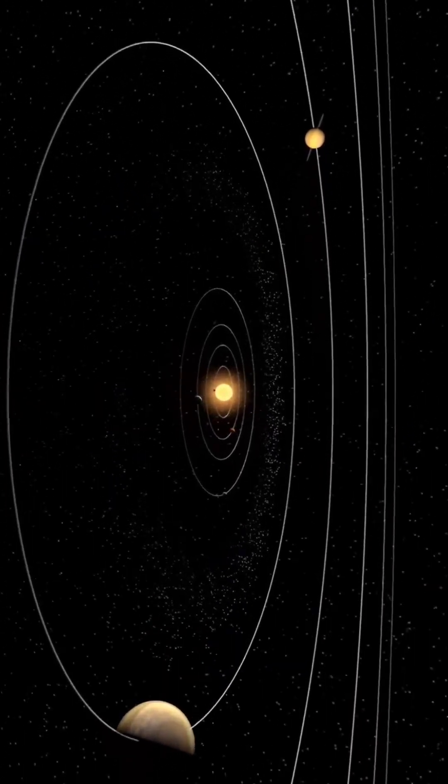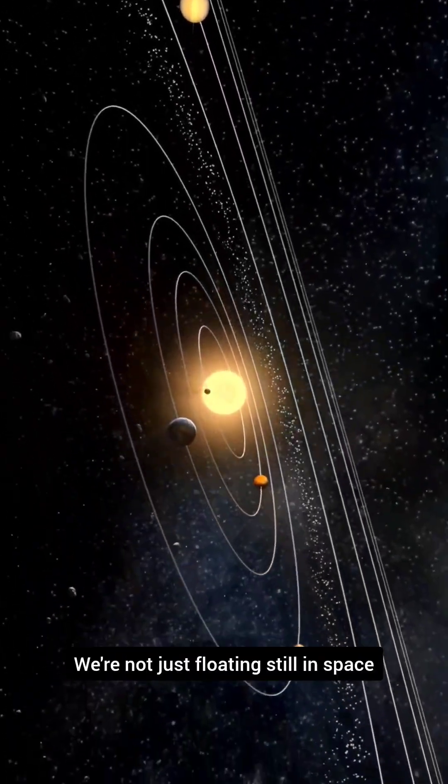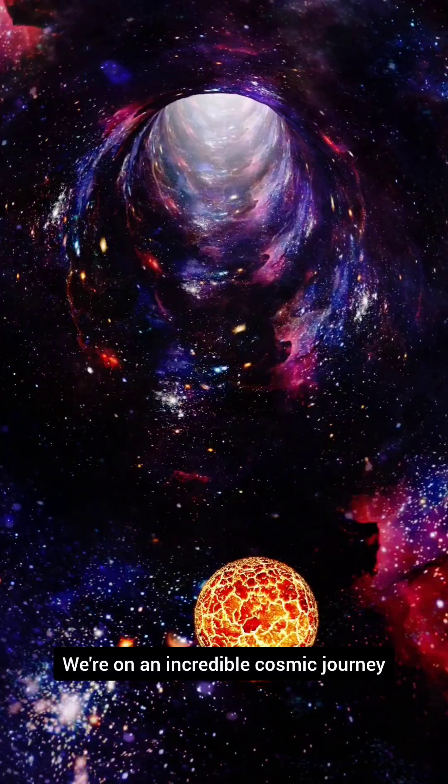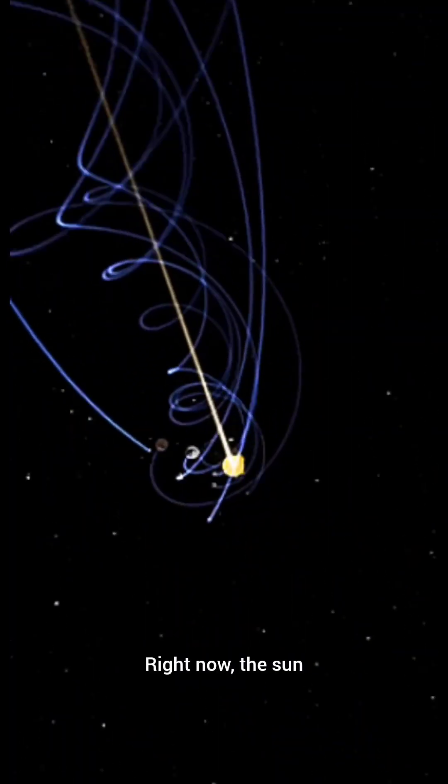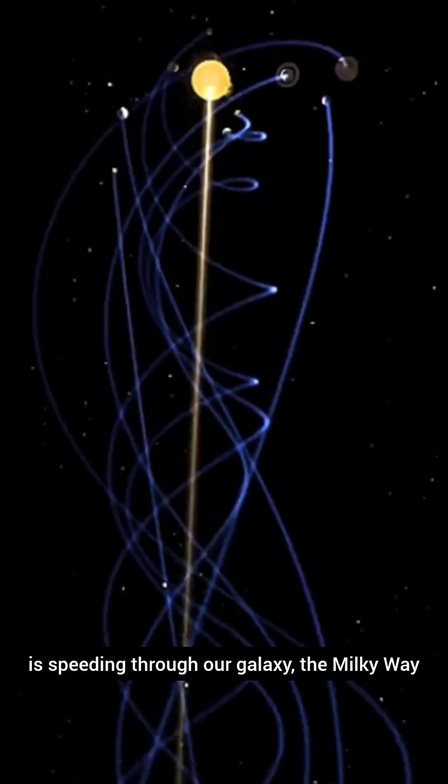Have you ever wondered where our entire solar system is going? We're not just floating still in space. We're on an incredible cosmic journey right now. The Sun, along with all its planets, moons, and asteroids, is speeding through our galaxy, the Milky Way.